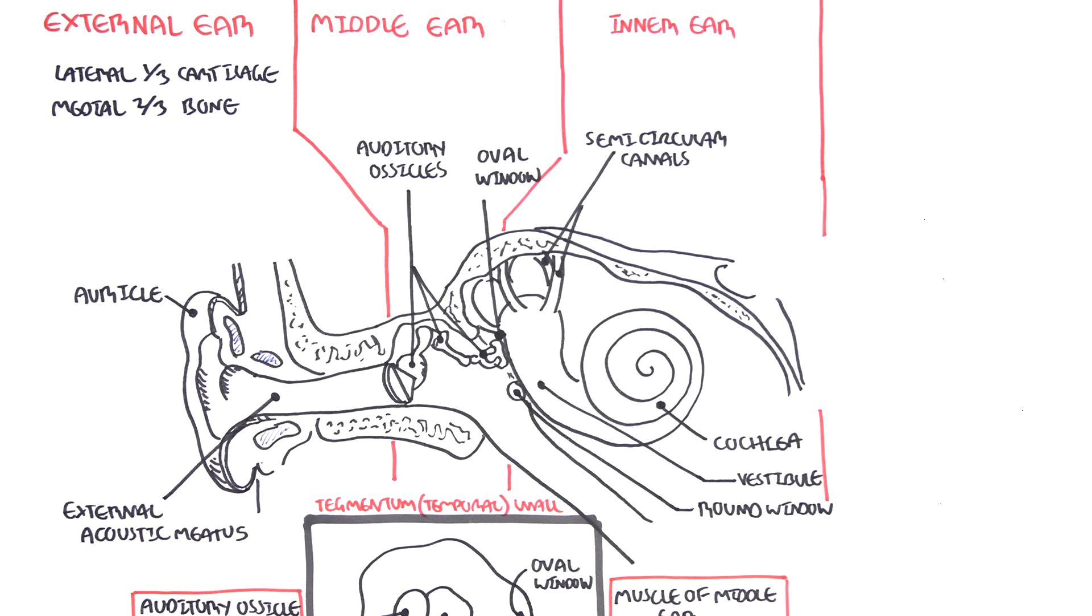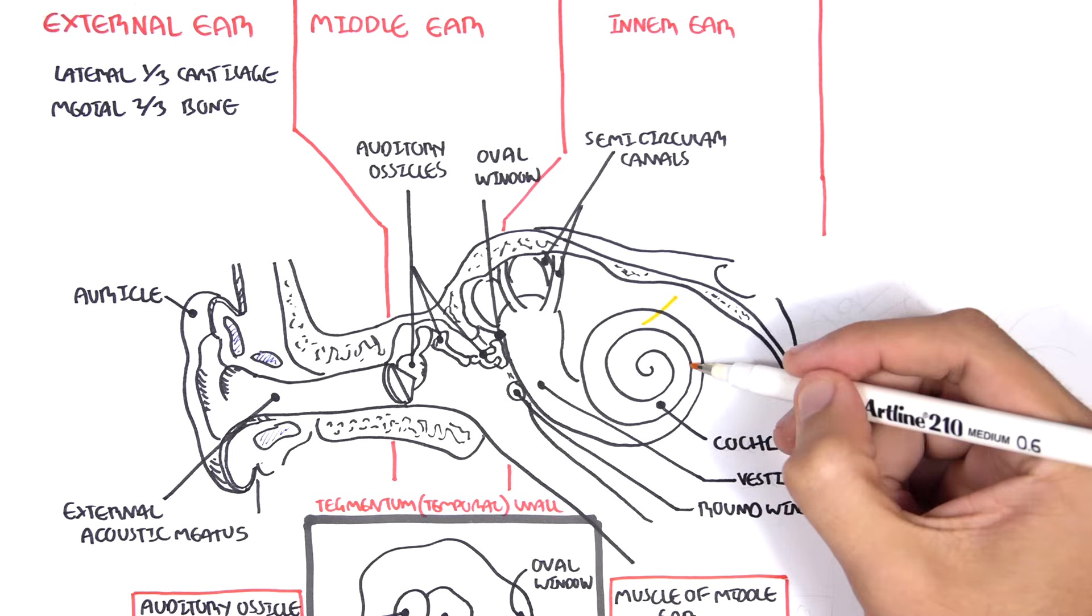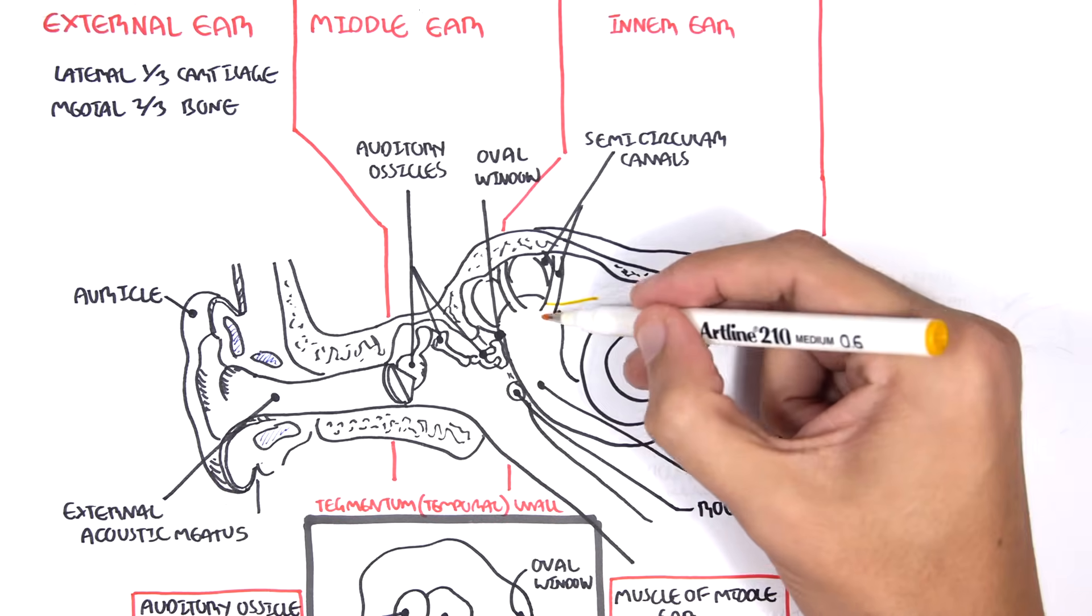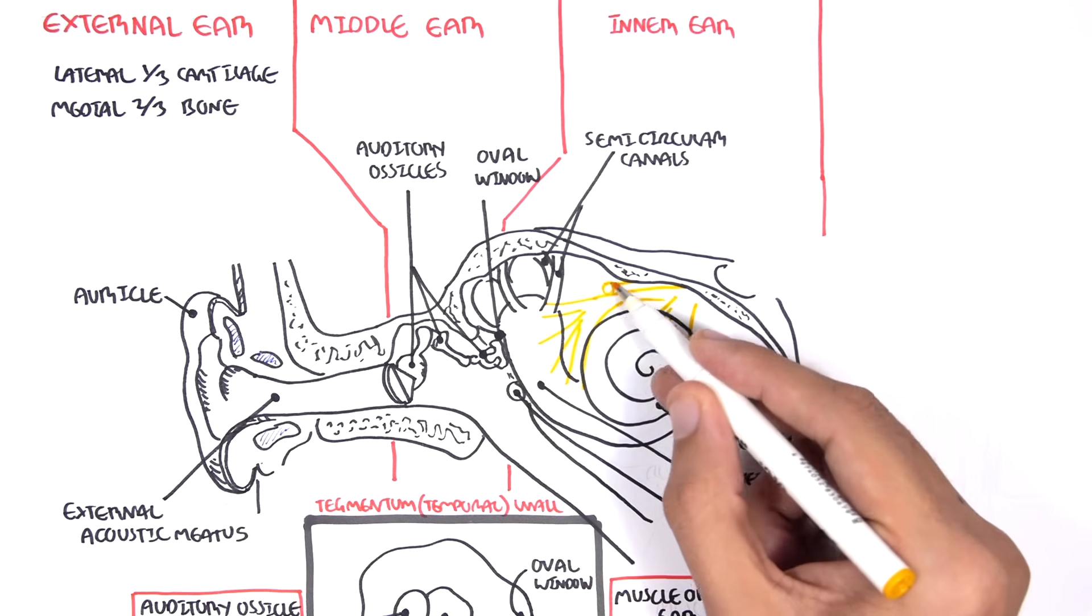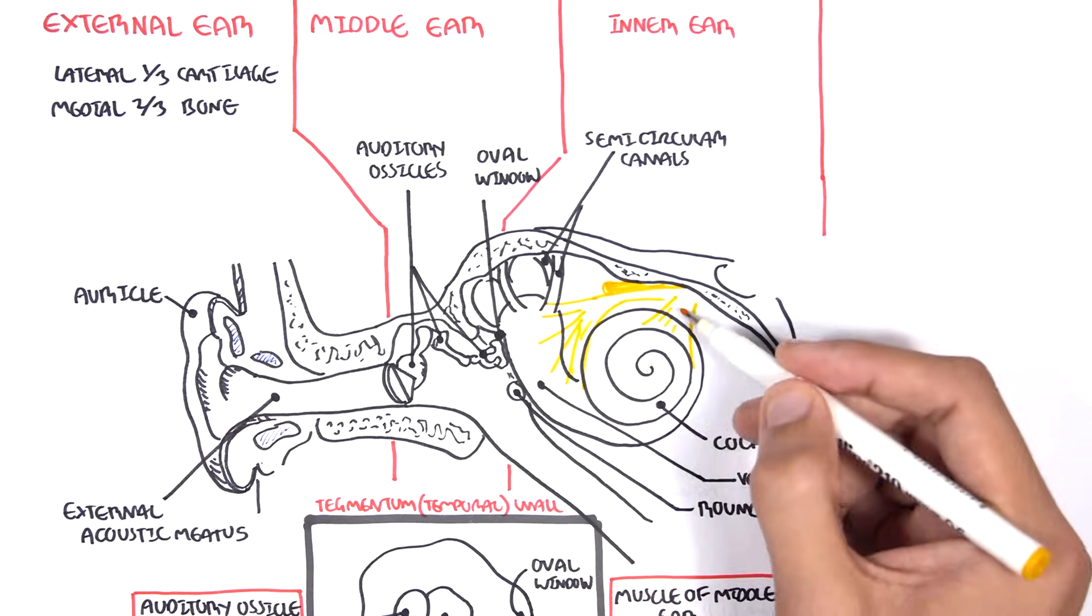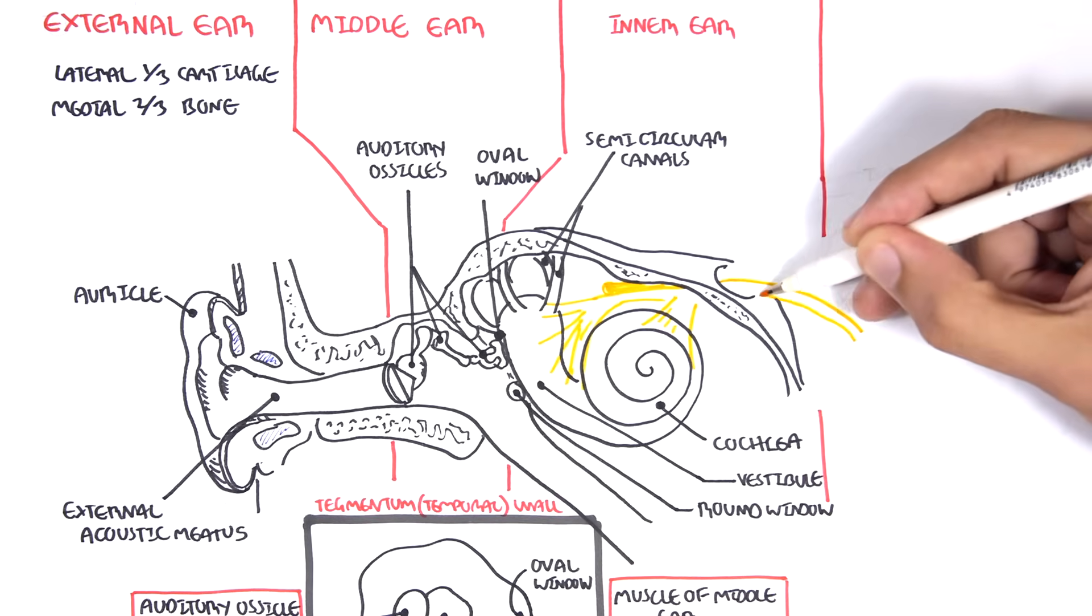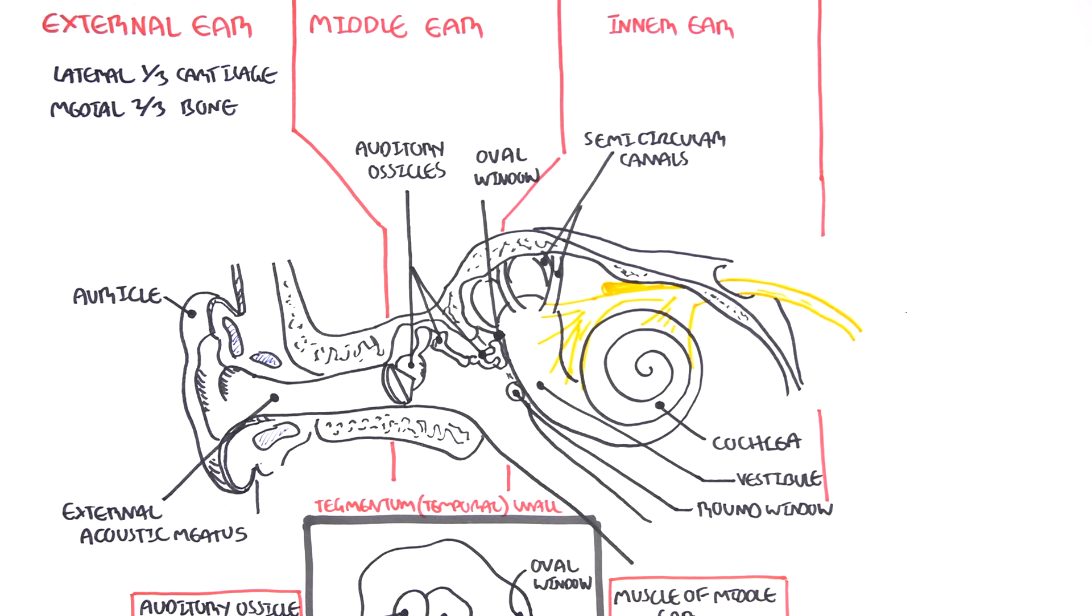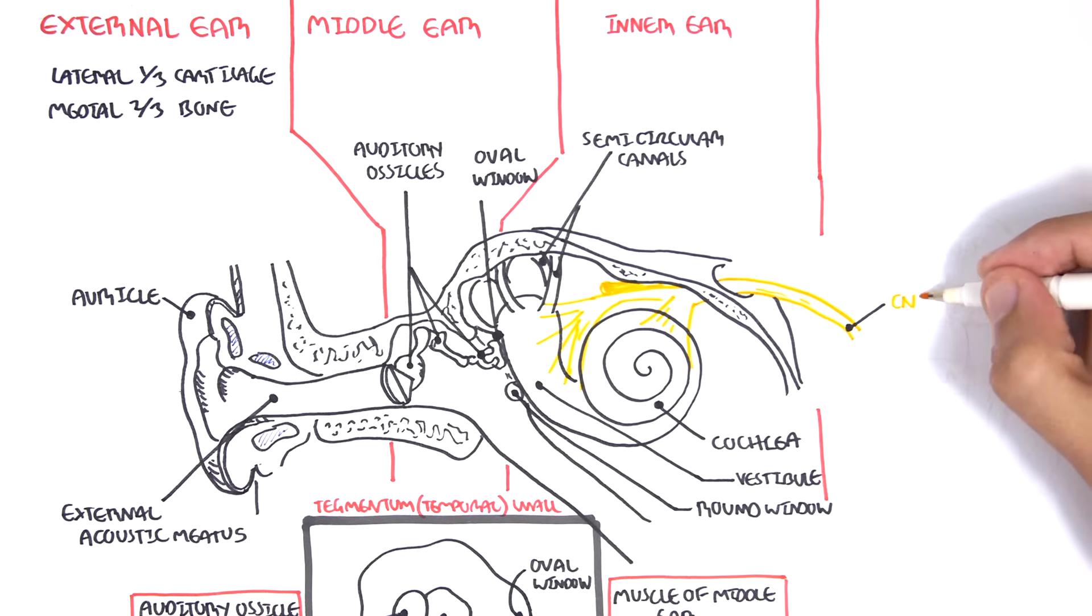Anyways, the movement of the hair cells causes these hearing signals to be sent to the brain through nerves. So here we can see nerves leaving the cochlea and the vestibule. These nerves are sensory nerves and form cranial nerve 8, also known as the vestibulocochlear nerve, hence where it's coming from.